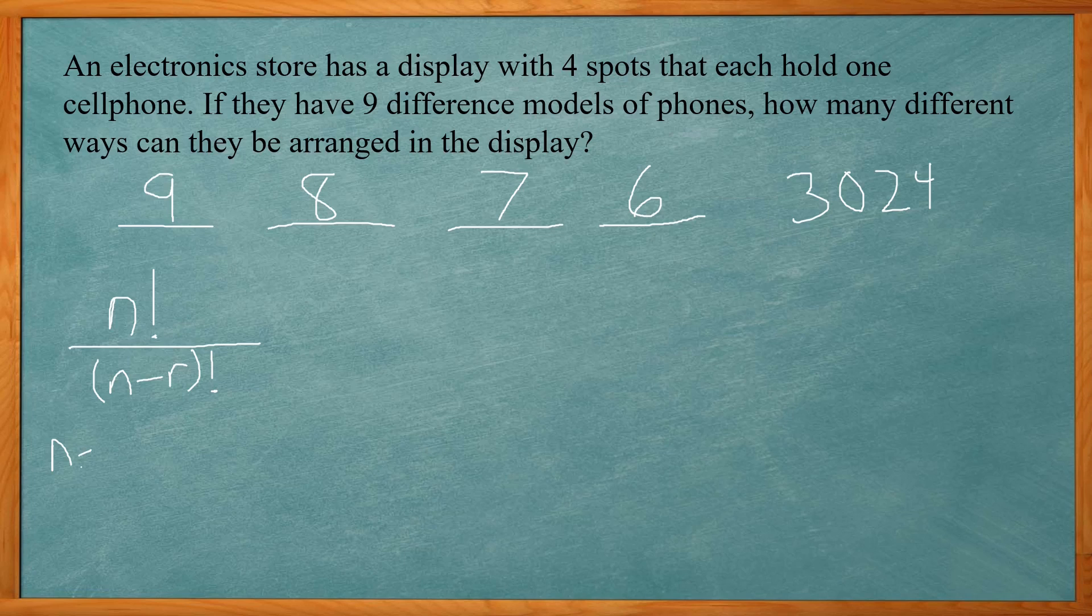So where n is your total number of choices and r is how many you are choosing.